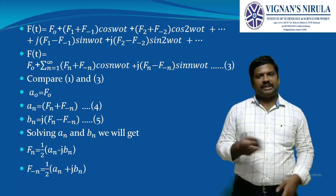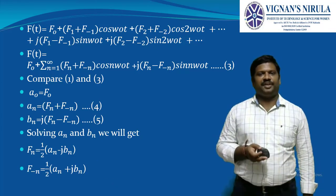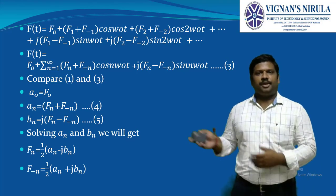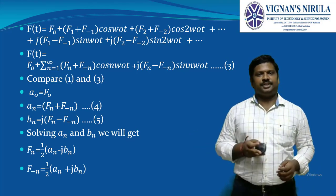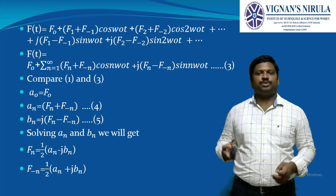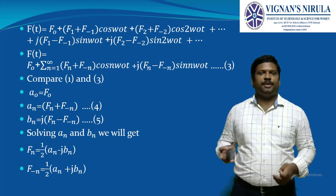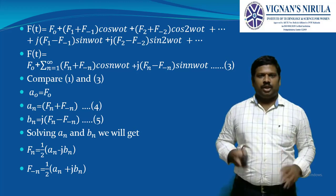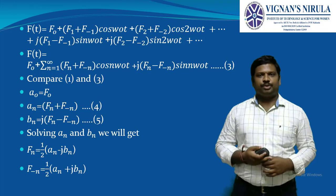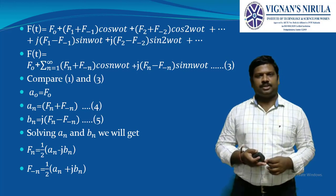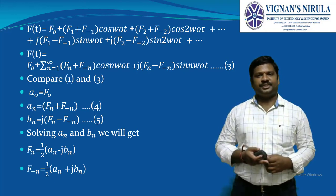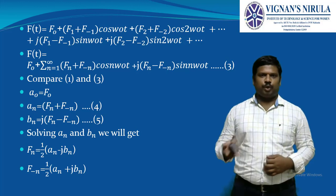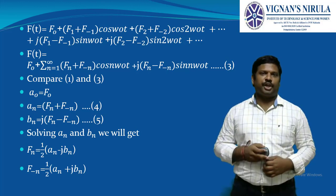Conversely, fₙ = (1/2)(aₙ - jbₙ) and f₋ₙ = (1/2)(aₙ + jbₙ). These are the topics covered today: the development of the trigonometric Fourier series, the exponential Fourier series, and the relation between the trigonometric and exponential Fourier series.